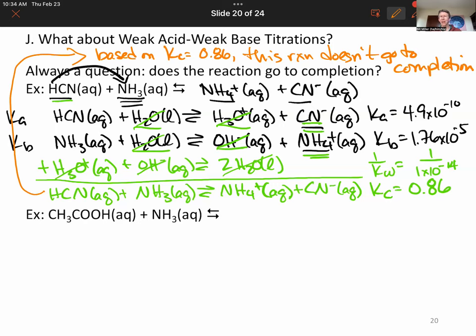And so this would not be a reaction that we would want to do for a titration because we would only go about halfway, since KC is close to one. And one of the things that we do for titrations is the reactions go to completion, and we use titrations to find the concentrations of an unknown acid or the concentration of an unknown base. We also use titration type reactions to form buffers, and we would not be able to calculate the pH of this buffer.